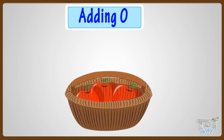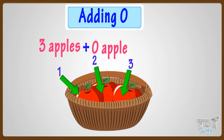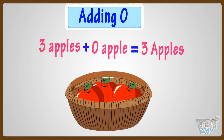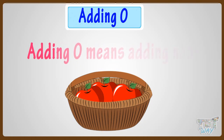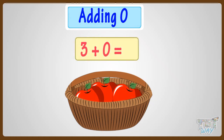Now let's take another example. There are 3 apples in the basket. I do not put any more apples in the basket. How many apples are there in all? Let's count! 1, 2, 3. So again, 3 apples are there in the basket. That is, by adding 0 apple or no apple, the number of apples remain the same. Adding 0 means adding none. We can write it as: 3 apples plus 0 apples equals 3 apples, or 3 plus 0 equals 3.